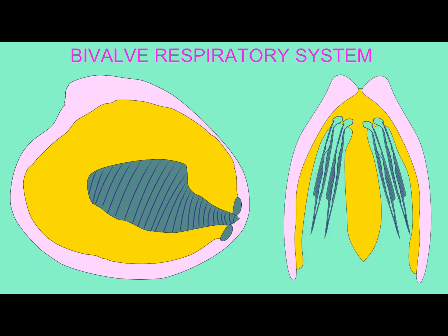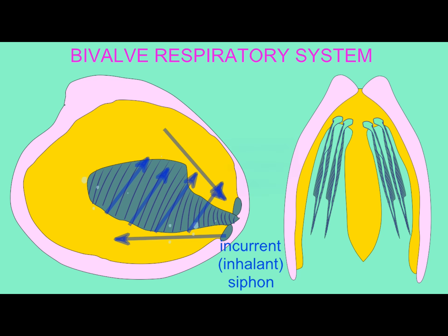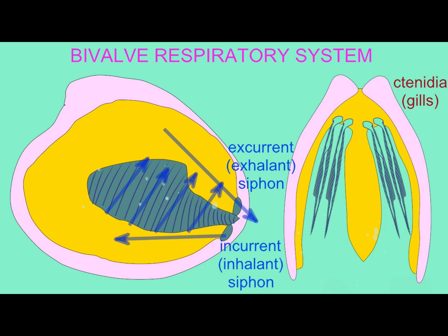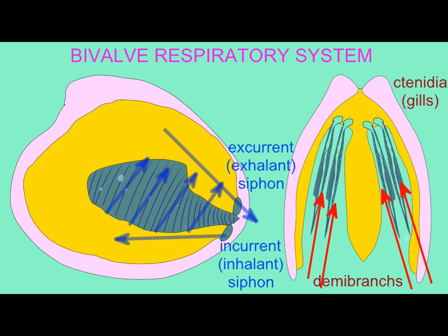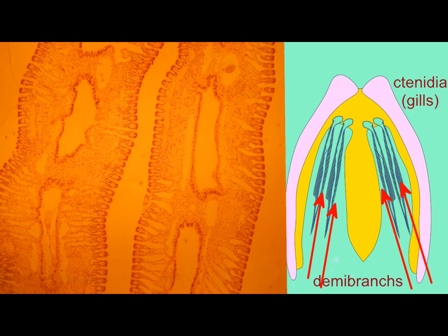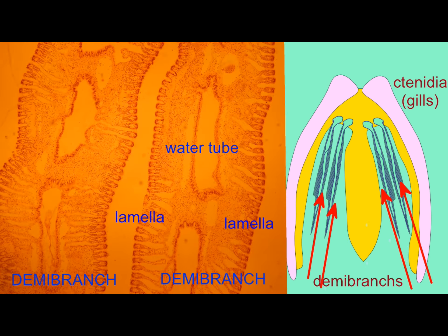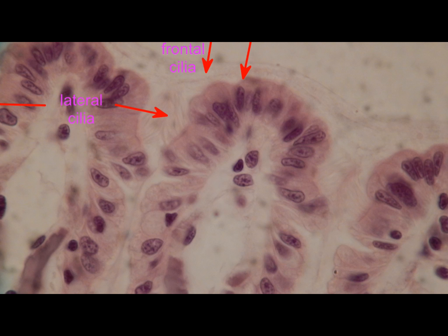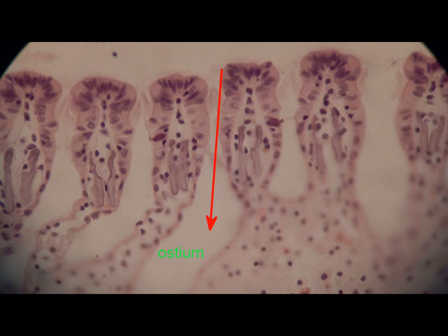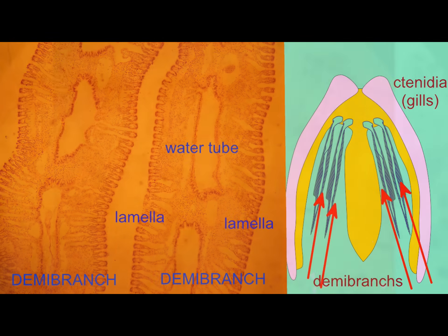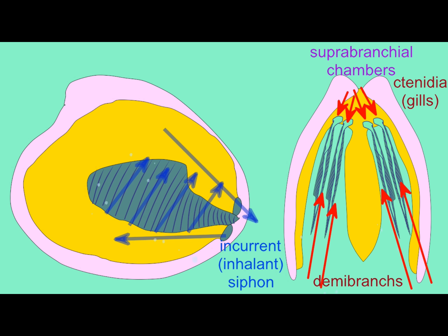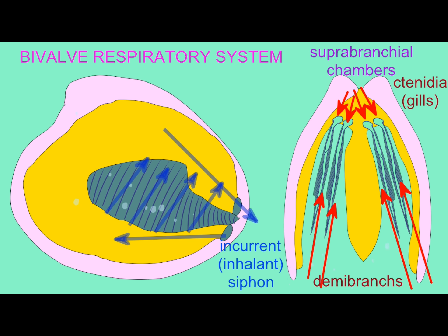You should be able to explain how water flows through a bivalve and its importance. As water comes in through the inhalant siphon, goes through the body, and exits through the exhalant siphon, this is important because it allows oxygen to flow over the gills so they can breathe. Food particles are trapped in mucus and swept towards the mouth. As water leaves, it can also carry wastes and gametes with it, making this flow of water extremely important for a number of systems.